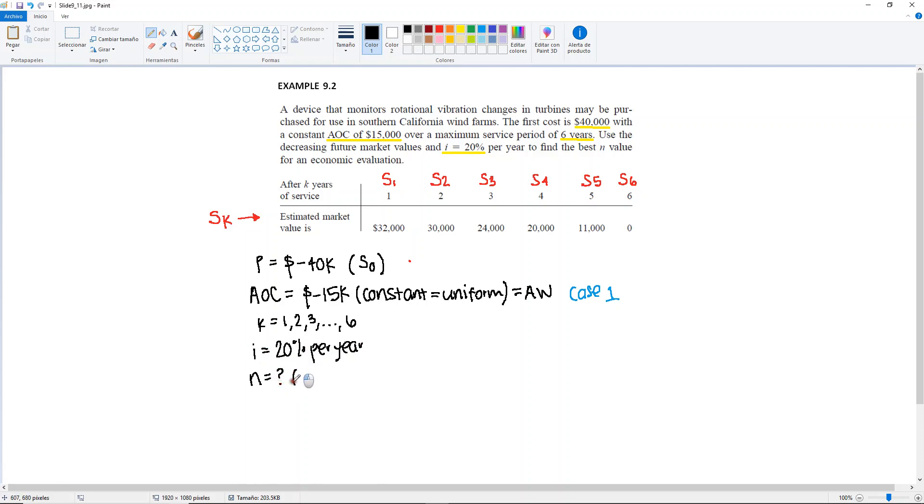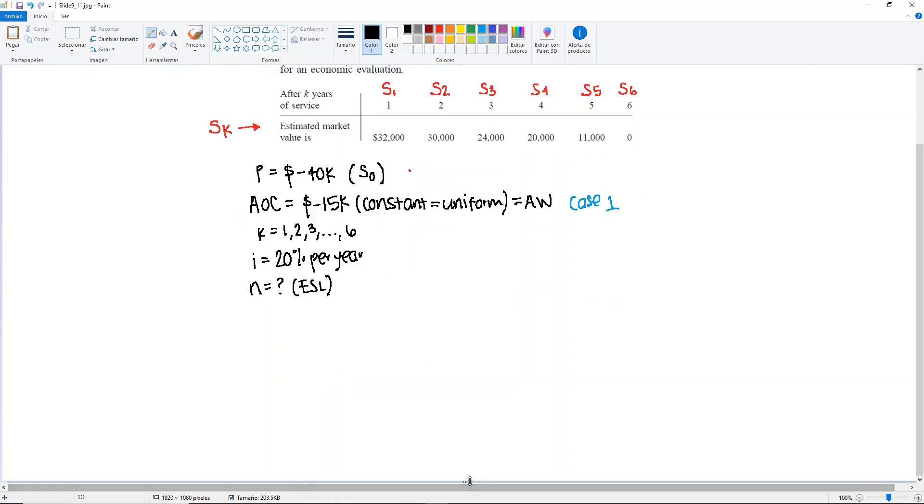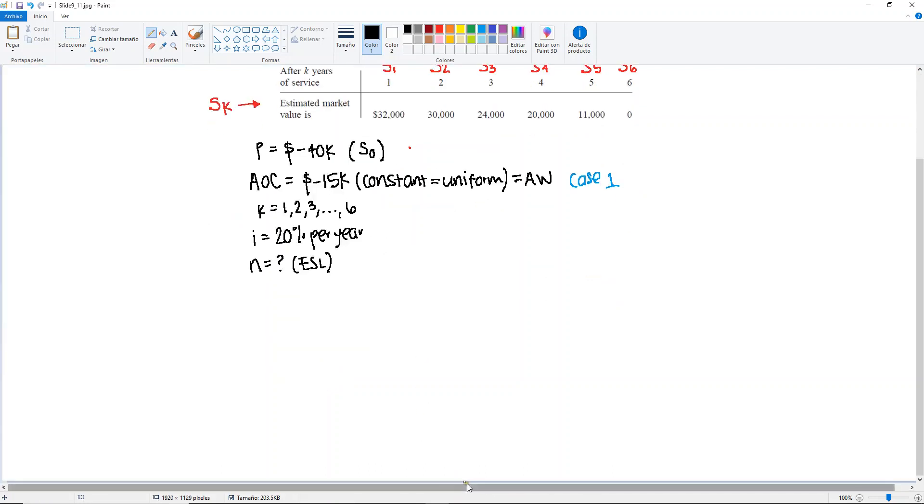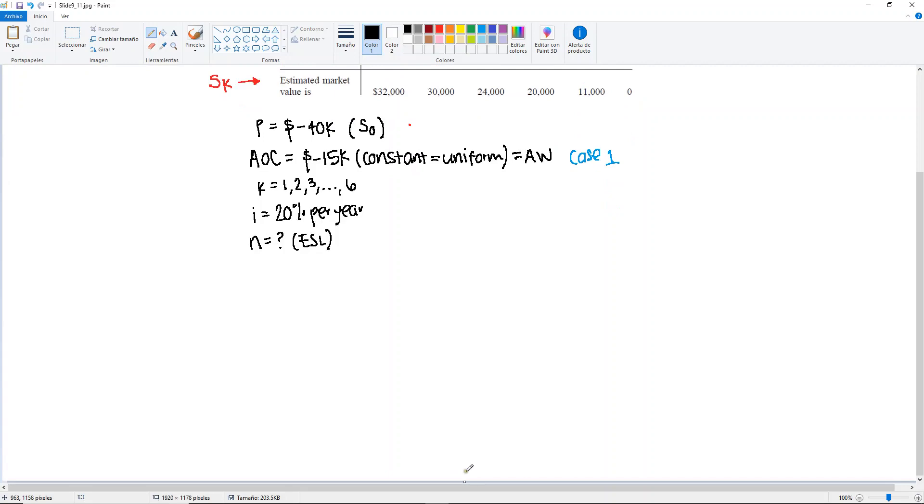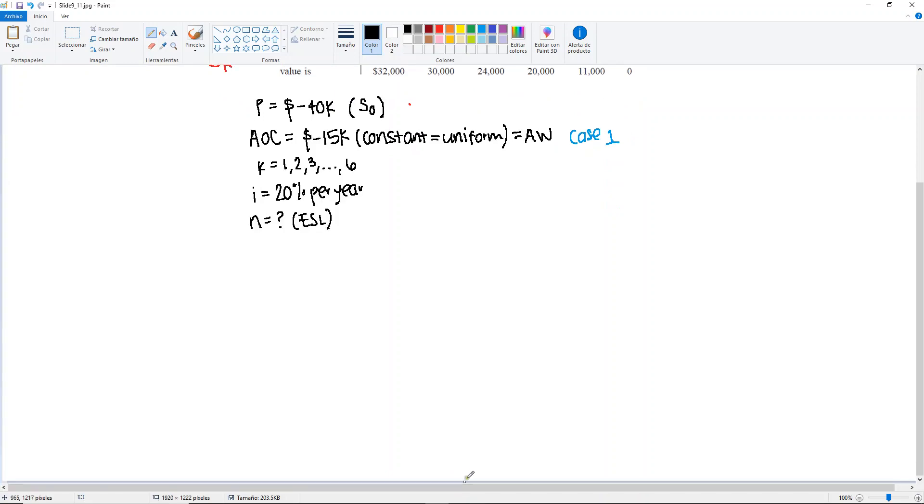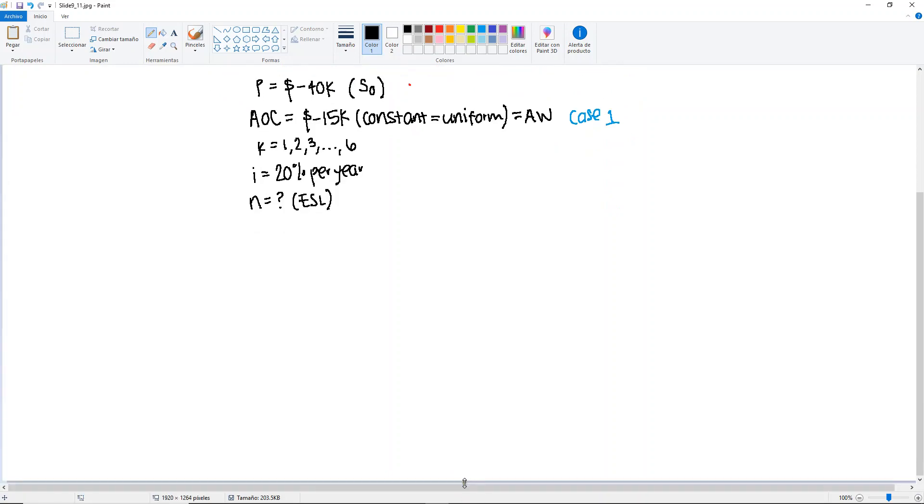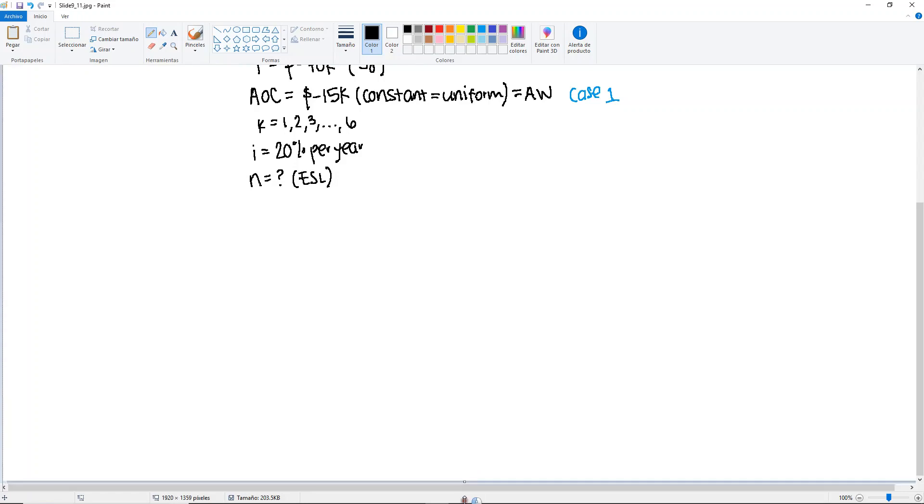So we don't know what N will be, but we're going to find it with the ESL. So that means that we're going to have to do the annual worth for six years. Let me just get some space here.